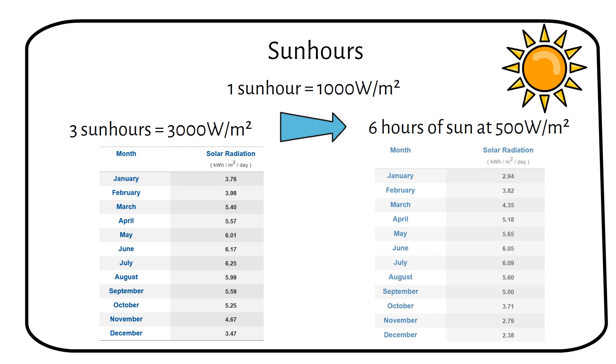You can see this when we compare sun hour charts for Houston and New York, showing significant differences. These calculations are based on averages. Some days will produce more and some days less.